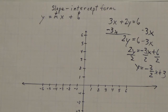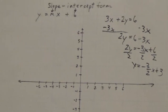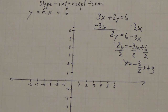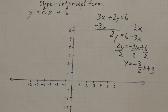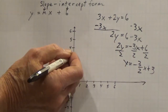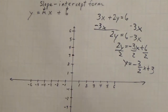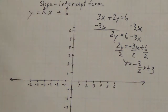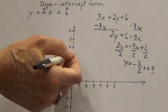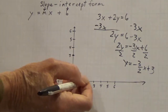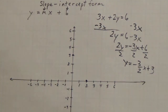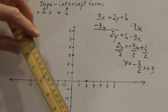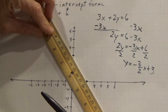Y equals negative 3 halves x plus 3 — now we have slope-intercept form. Our y-intercept is at 3, this point right here. My slope is negative 3 halves; that means it goes downhill from left to right. As we go 3 down, we go 2 forward. So we have this point — we have both of our intercepts: the x-intercept and the y-intercept in this case.